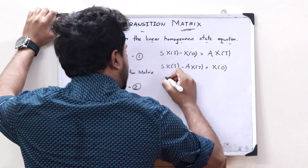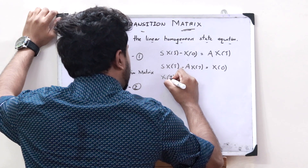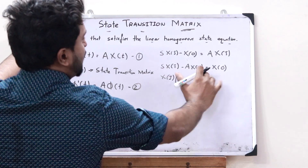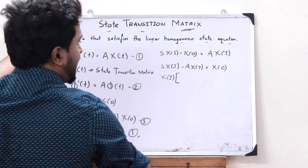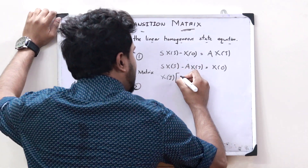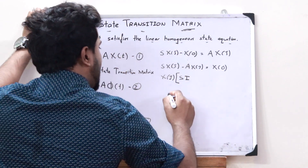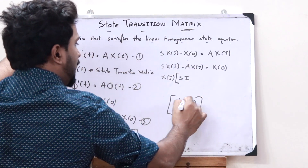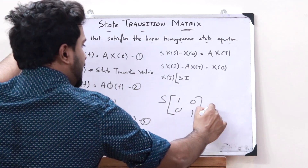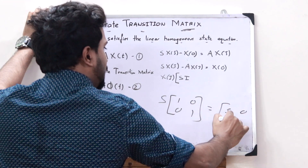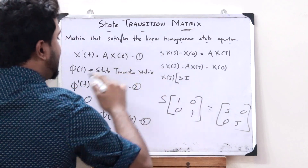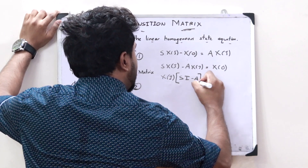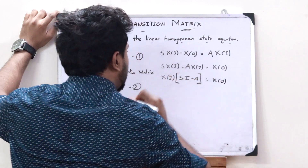Here, X(s) is common. We can take X(s) multiplied by — because it is s and all these are in terms of matrices — we can't simply write s, but rather we have to write s·I, where I is the identity matrix. So s·I is simply [s, 0; 0, s]. Therefore, this would become (sI − A)·X(s) = x(0).